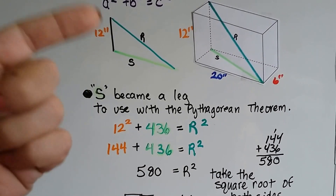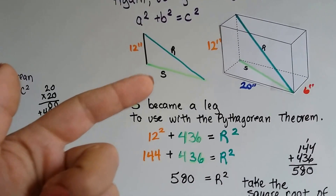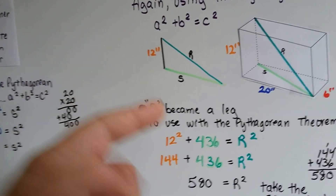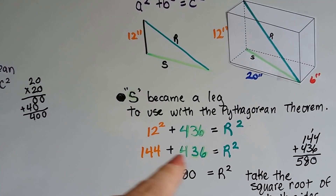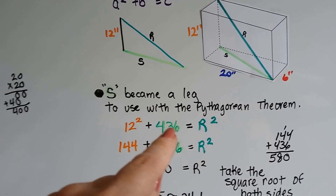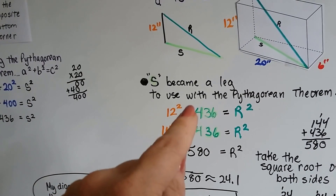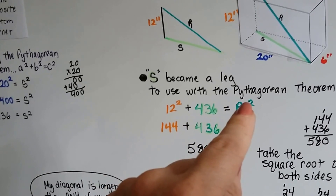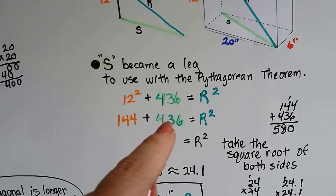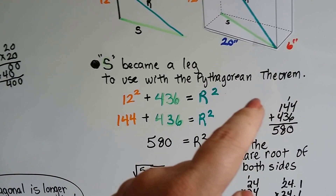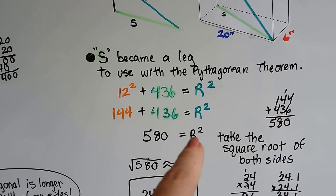S becomes a leg, and we've got 12, so that's going to be 12 squared plus 436 — because if it's A squared plus B squared equals C squared, we already know that S squared is 436. So we don't need to write S squared into our equation, because 436 is S squared. We've got 12 squared plus 436, which takes the place of S squared, equals R squared. So 144 — that's 12 times 12 — plus 436 equals R squared. 144 plus 436 is 580, so 580 equals R squared.